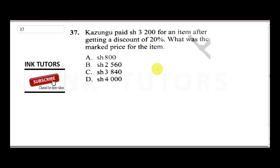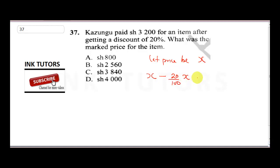After the 20% discount, Kazongu paid 3,200 shillings. Let the original price be x. Then x minus 20/100 of x equals 3,200. Since 20 over 100 is 0.2, this becomes x minus 0.2x equals 3,200.